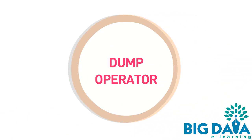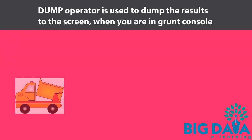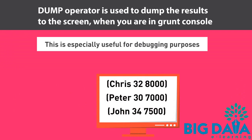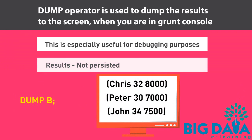Dump Operator — the Dump Operator is used to dump the results to the screen when you are in the Grunt console. This is especially useful for debugging purposes. Note that the Dump Operator will not persist the results permanently; the results displayed will only be available during that PIG session. Dump is very useful to make sure that each alias contains the data as expected, especially when running PIG commands line by line within the console. In our example, alias B had certain values and we can verify the same using the Dump B statement.